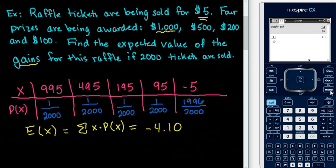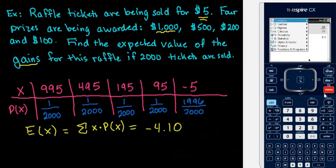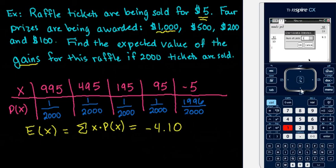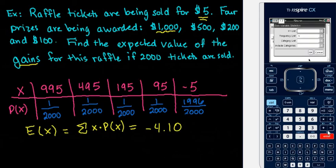The other way that you can do it is you can click the menu. This is more time-consuming, so it's easier just to actually type in the formula. Menu, go down to Statistics, Stat Calculations, 1VAR Stats. We're using one list. Like I said, this is more time-consuming.